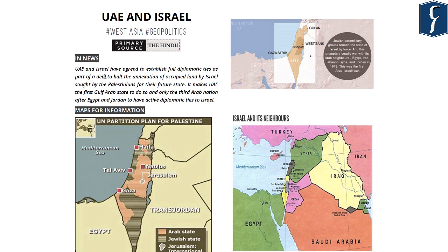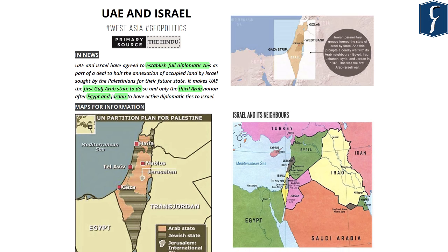Under this agreement, the UAE and Israel have agreed to establish full diplomatic ties. It makes the United Arab Emirates the first Gulf Arab state to do so and only the third Arab nation after Egypt and Jordan to have active diplomatic ties with Israel. This UAE-Israel agreement assumes great significance because the UAE and Israel have been in continuous confrontations in the Middle Eastern region, mainly because of the creation of a Jewish state of Israel in the Middle East.